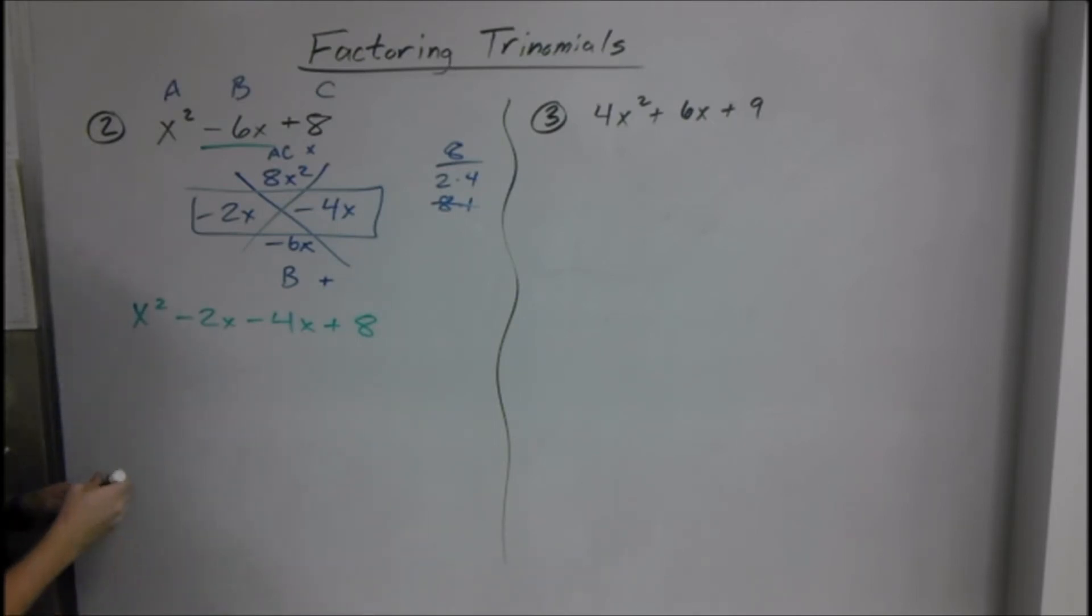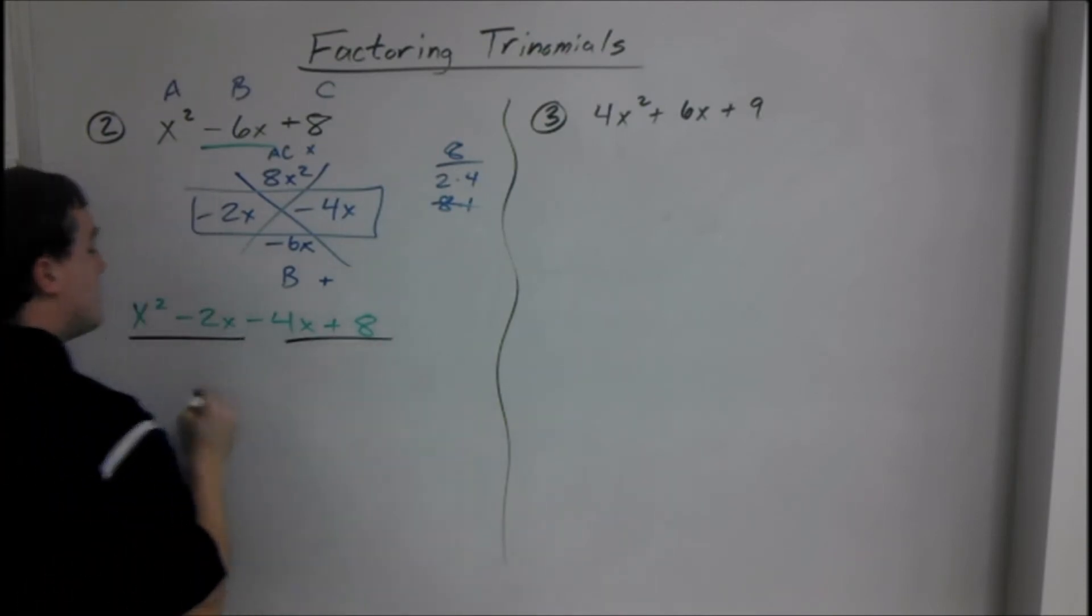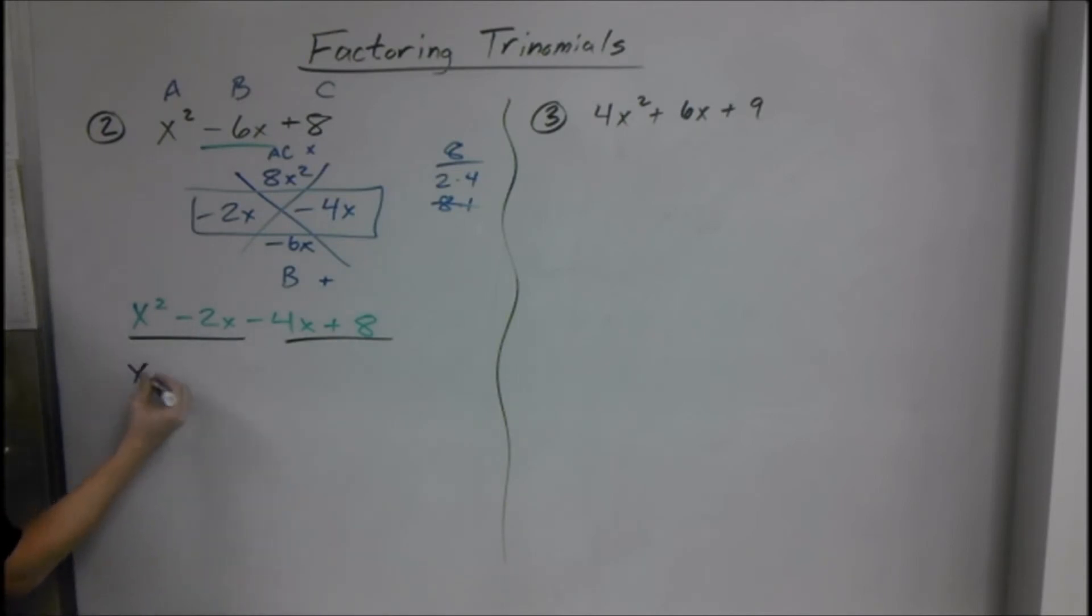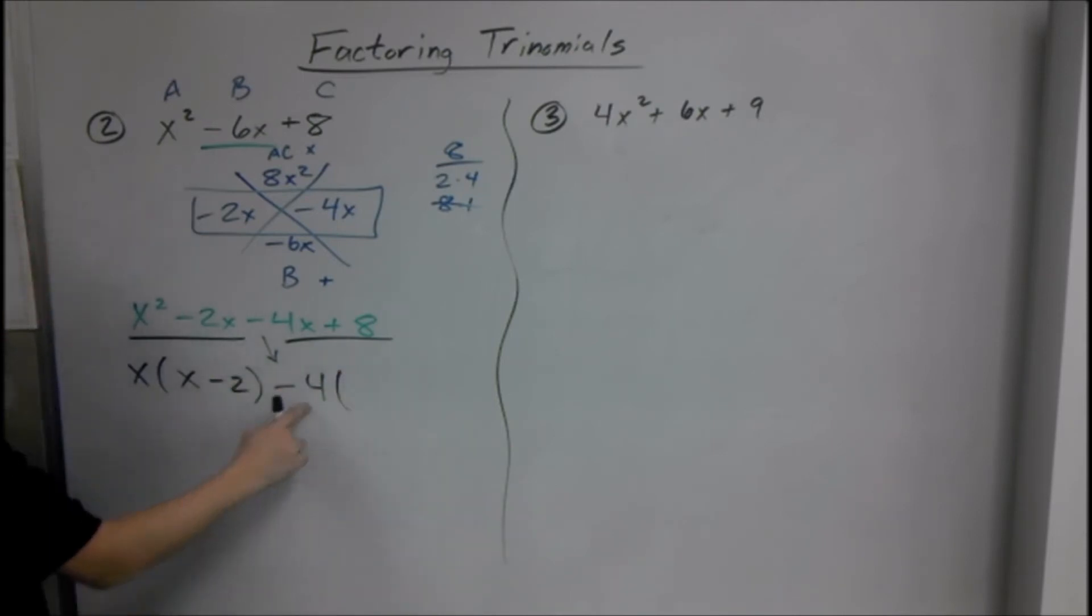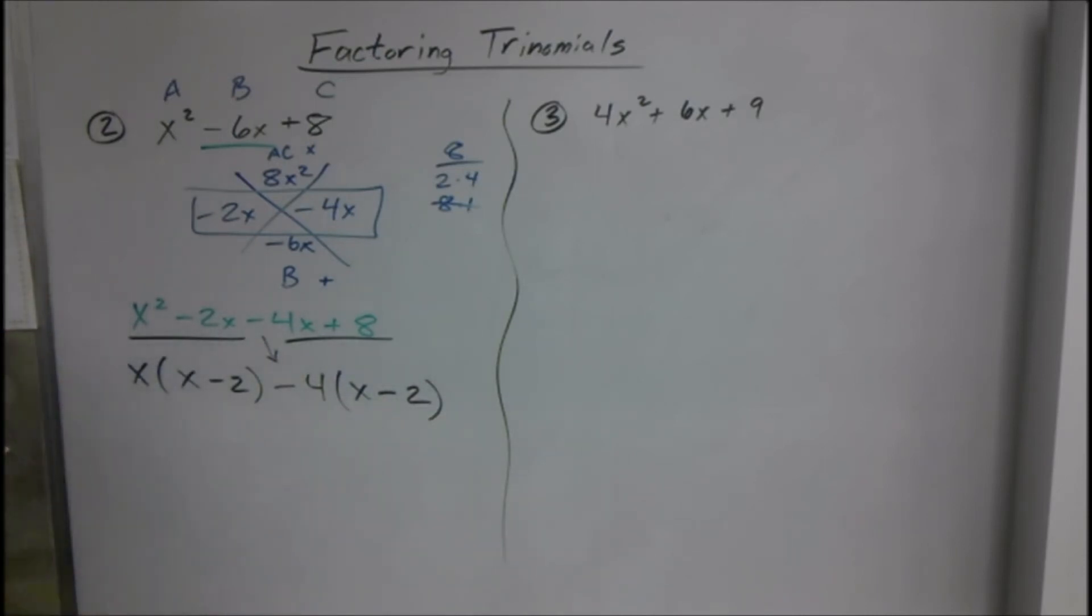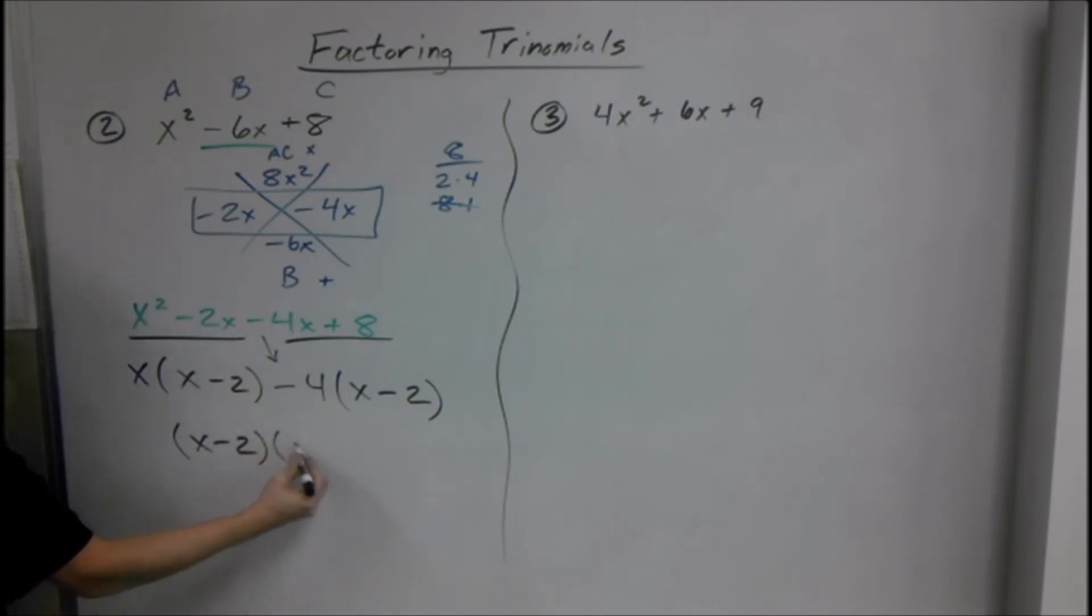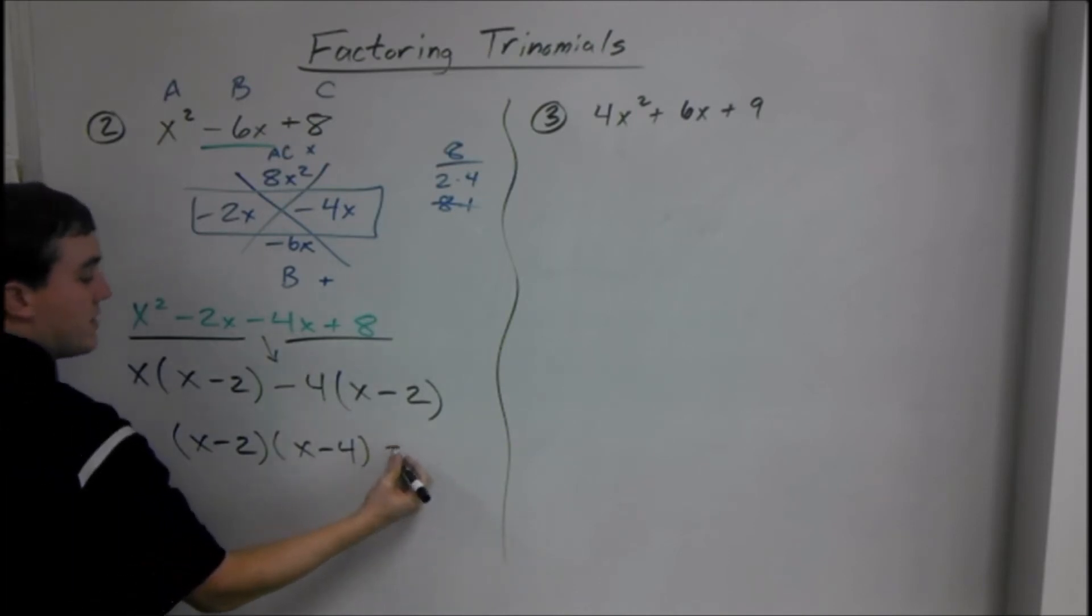We have X squared minus 2X minus 4X plus 8. Then you factor by grouping. We look at what these have in common. The only thing you take out is an X. If we take out one X from each of these, from two X's you have one left, minus 2. Whatever this sign is, that is going to drop down for factor by grouping. Minus 4X and 8. 4 goes into both of these. If we divide both of these by negative 4, it is going to be X minus 2. Everything on the inside goes in one. Everything on the outside goes in the other. So our factor form is X minus 2, X minus 4.